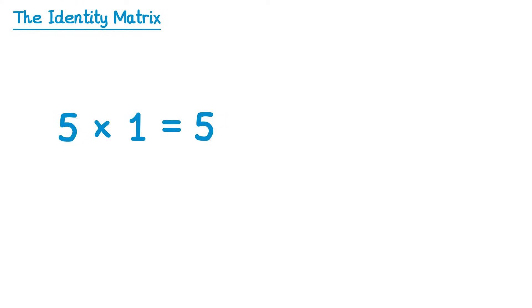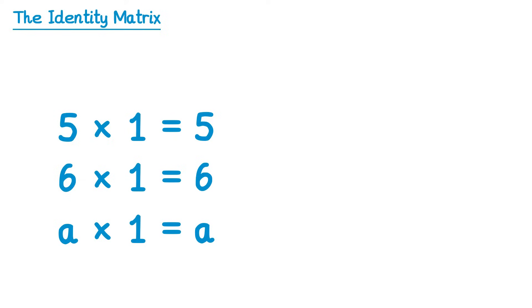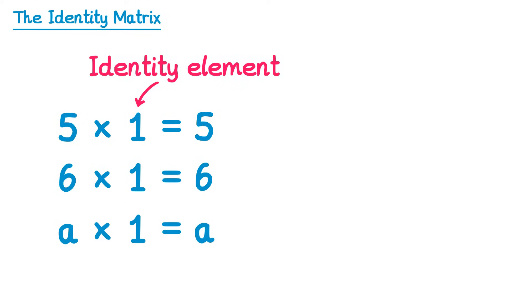In order to understand the term identity matrix we're going to forget about matrices for a moment and just consider some normal numbers. Notice how five times one gives you five, and six times one gives you six. In fact, it could be any number — a times one will just give you a. So the number you started with, five, six, or a, is the number you end with. Due to this property of the number one, we call it an identity element for multiplication, because it keeps the number identical — it remains unchanged.